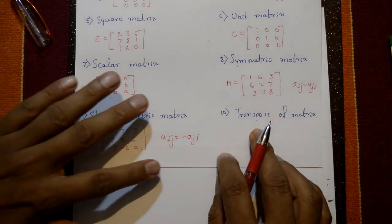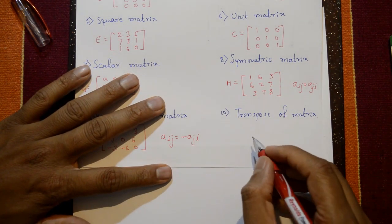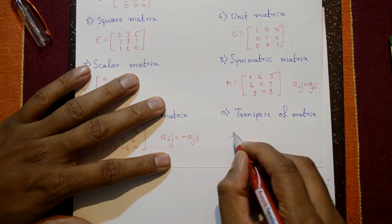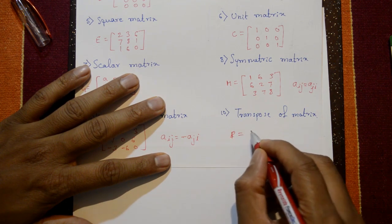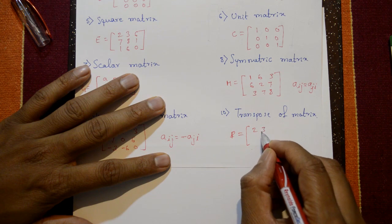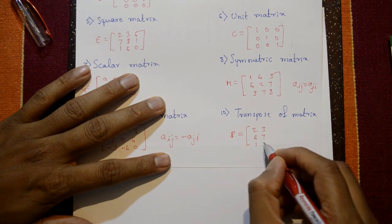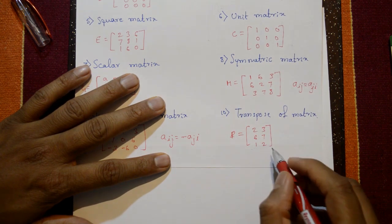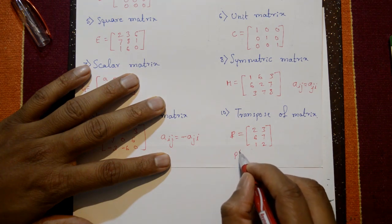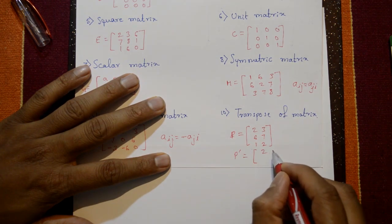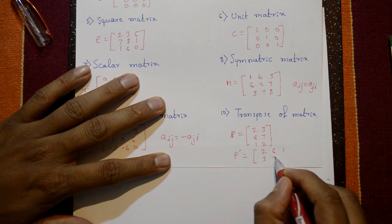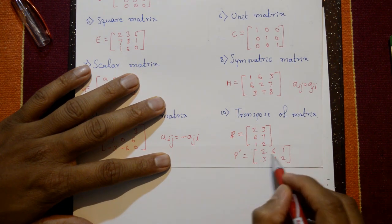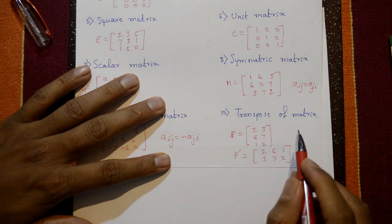The transpose of a matrix: if P equals [2, 3, 6 / 7, 1, 1 / 6, 7, 1, 2], then P-dash (transpose) equals [2, 6, 1 / 3, 7, 2]. Rows become columns and columns become rows — this is called the transpose of a matrix.